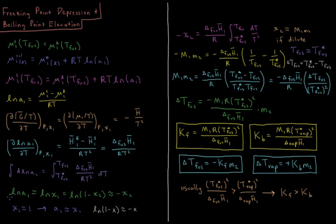At this point we use an approximation: the natural log of the activity is approximately the natural log of the mole fraction, because activity approaches the mole fraction as the mole fraction approaches 1, and for solvents the mole fraction is very close to 1. So ln(χ₁) = ln(1 − χ₂). Since χ₁ + χ₂ = 1, χ₁ = 1 − χ₂. Using a Taylor series for ln(1 − χ₂) evaluated at χ₂ = 0, the first term is −χ₂. So we approximate the natural log of the activity of our solvent as the negative mole fraction of the solute.